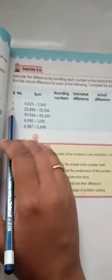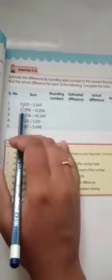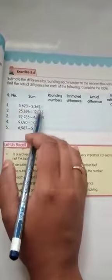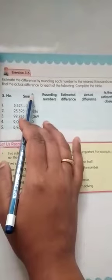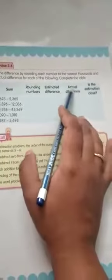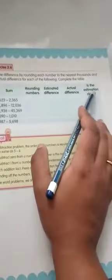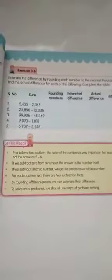They have given serial numbers 1, 2, 3, 4, 5. The columns are: sum, rounding numbers, estimated difference, actual difference, and whether the estimation is close to the number or not — we have to check.